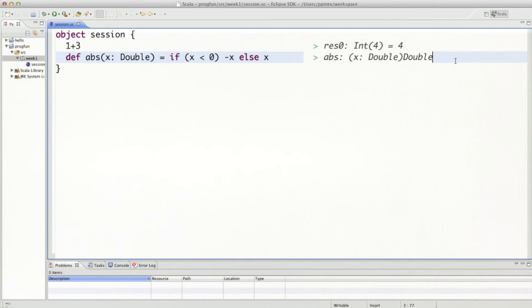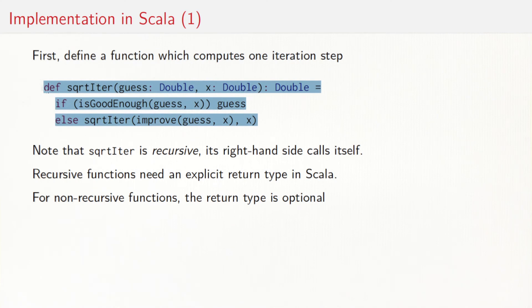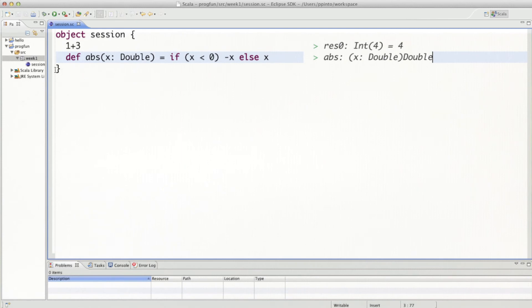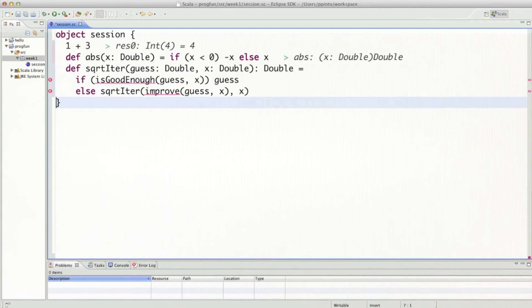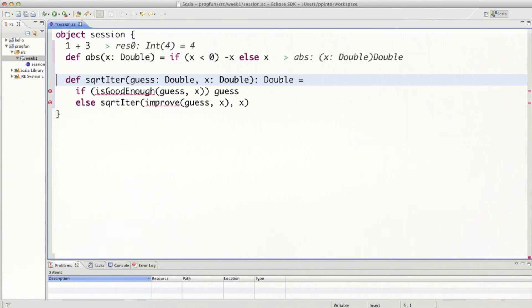So let's use the worksheet to complete our square root function. The first thing I'm going to do is take it from the slide. So I select square root iter here and paste it inside the worksheet. I can reformat with ctrl shift F. So that would format things nicely. But the worksheet still doesn't compile because, of course, I have two functions here that I haven't yet defined. That would be is good enough and improve. So for is good enough, let's do that first.